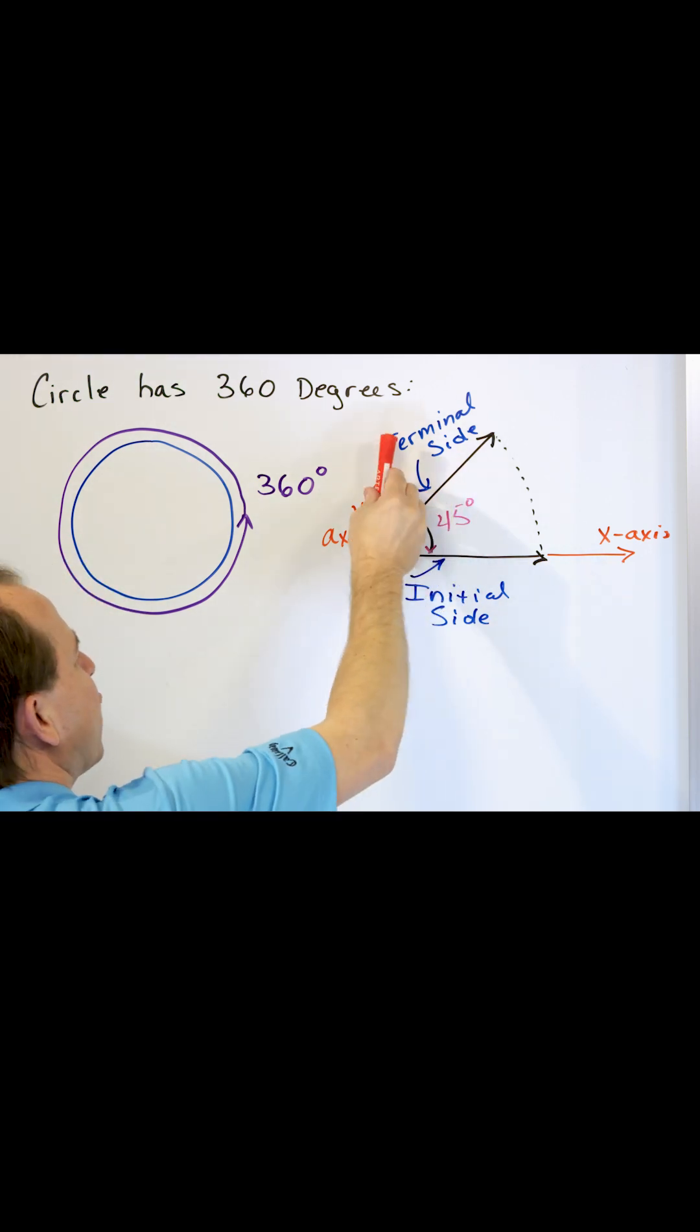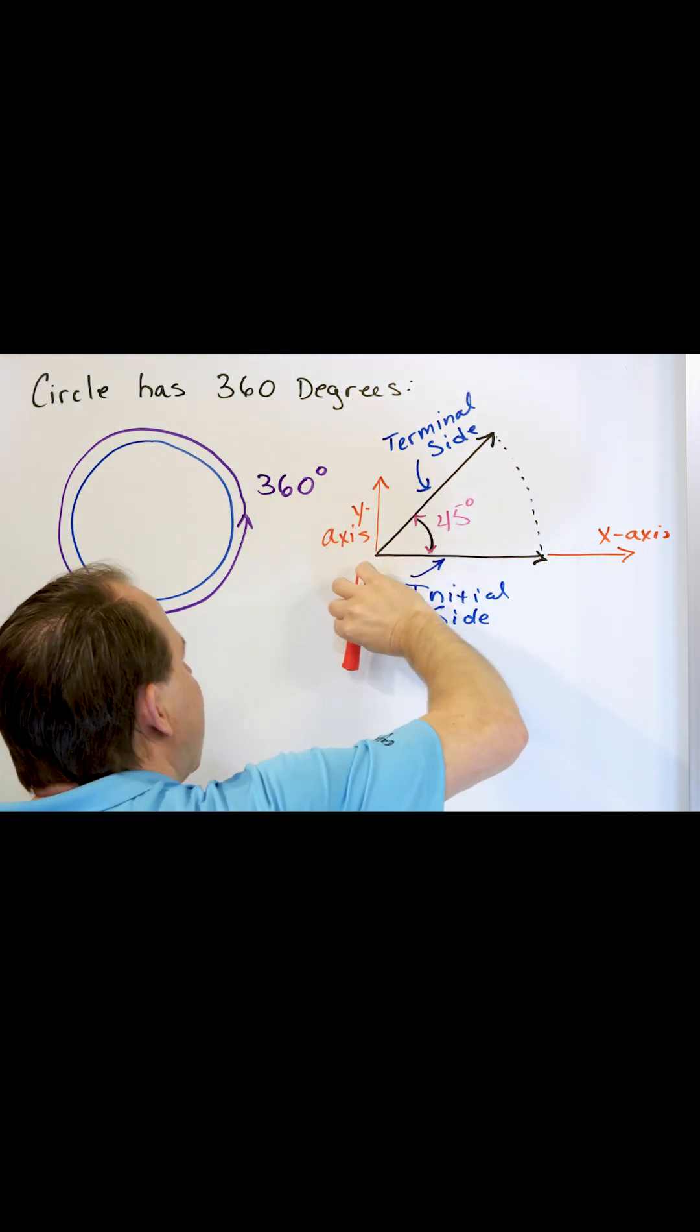And then of course you can continue past 90 and go all the way around, in which case you get back to 360 degrees.